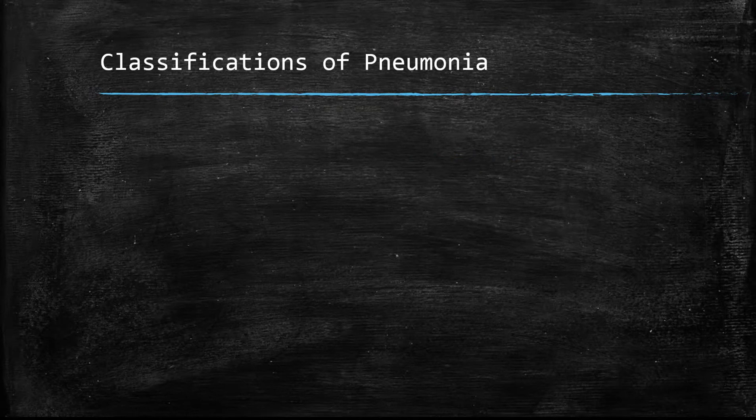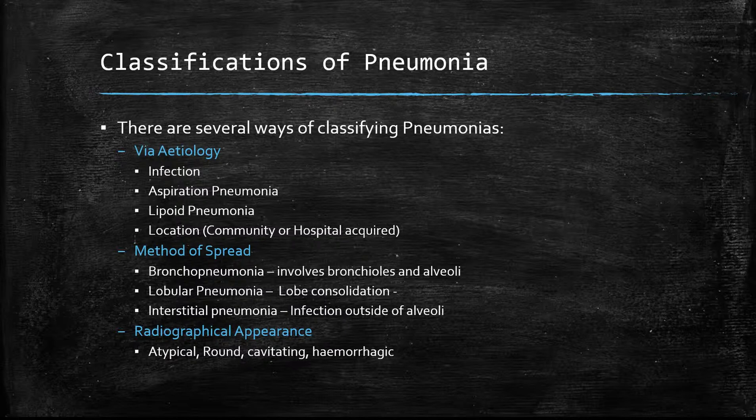Pneumonia can be classified in several different ways: via etiology, which includes infection, aspiration, and lipid pneumonia when somebody aspirates a lipid substance. It can also be classified depending on location — community or hospital acquired. Method of spread is also a common way to classify pneumonia, and this includes bronchopneumonia, lobular pneumonia, and interstitial pneumonia where the infection occurs outside of the alveoli. Radiographically, pneumonia can also be classified as atypical, round, cavitating, and haemorrhagic.